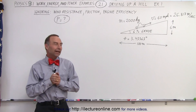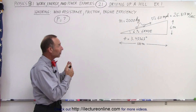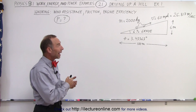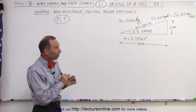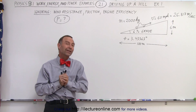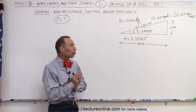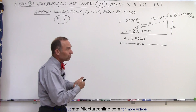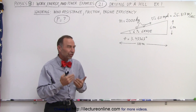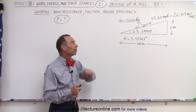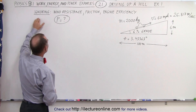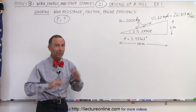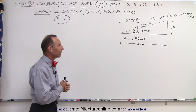Welcome to our lecture online. Here we have a 2,000 kilogram car driving up a 6% grade at 60 miles per hour, which is about 26 to 27 meters per second, or about 94 kilometers per hour. The question is: what is the power required of the engine to move the car at 60 miles per hour? In this first case, we're going to ignore wind resistance, friction, and engine efficiency.